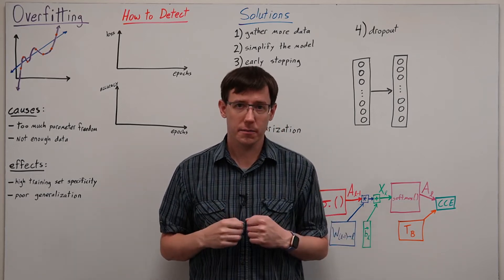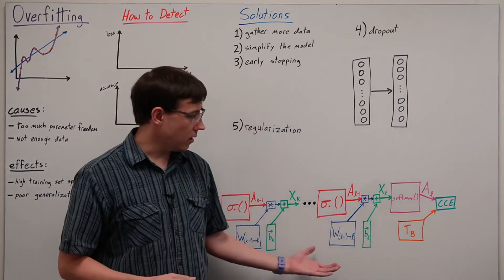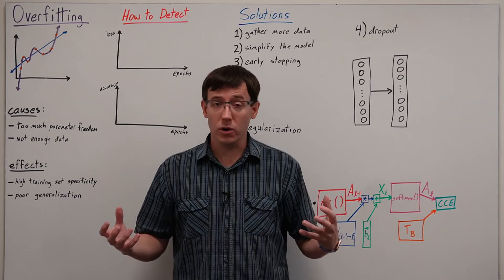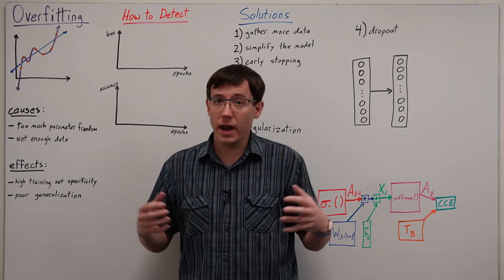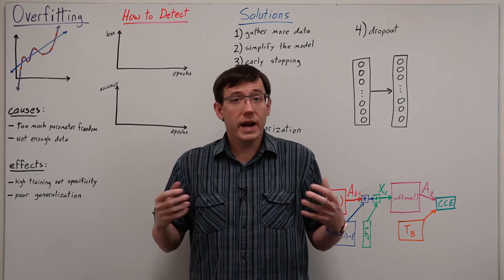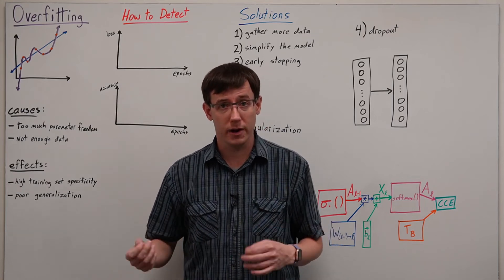In the context of neural networks, our parameters are the weights and biases. And so as our neural networks get bigger and have more and more weights, they will have more and more freedom to choose their parameters. So whenever we're training a large neural network, we want to be on the lookout for potential overfitting.